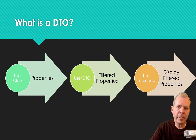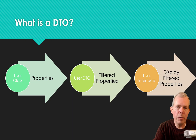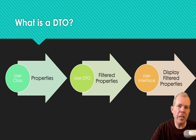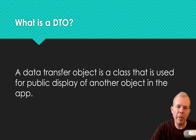A DTO is the object you see in the center of the diagram. On the left side you have a user class, and on the right side you only want to use a portion of the properties of your user class, or a modified property. What you need in the center is something called the user DTO, and that will help you customize things.